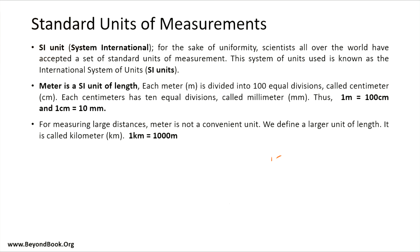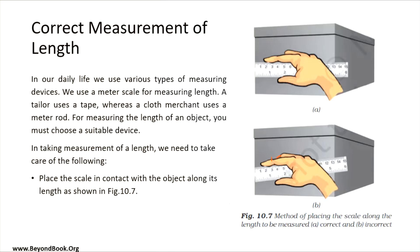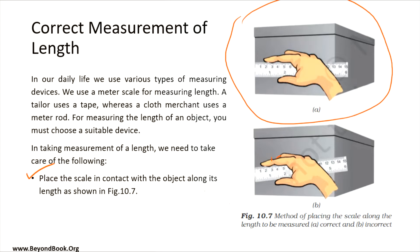Moving on to correct measurement of length. In daily life we have different measuring devices — a tailor uses a tape, whereas a cloth merchant uses a meter rod. In order to take the measurement of any object, if you have a measuring scale, you need to place the scale in contact with the object along its length, just like shown in figure 10.7.